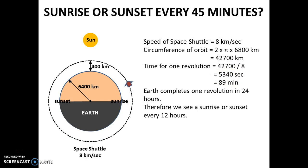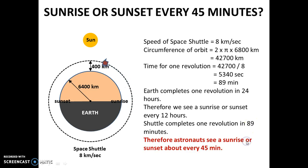Now, since the Earth completes one revolution in 24 hours, we on the Earth see a sunrise or sunset every 12 hours. But since the space shuttle completes one revolution in 89 minutes, the astronauts on the space shuttle will see a sunrise or sunset every 45 minutes.